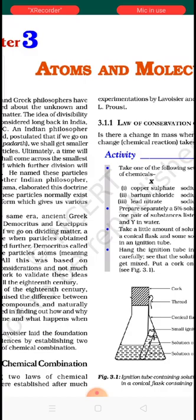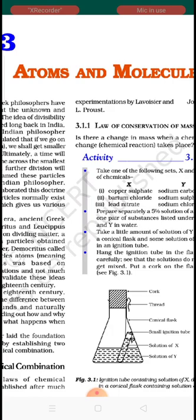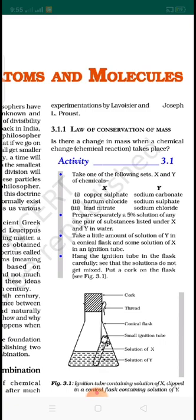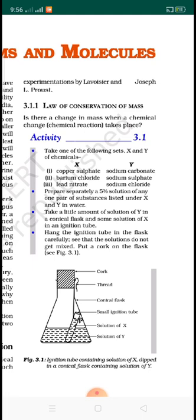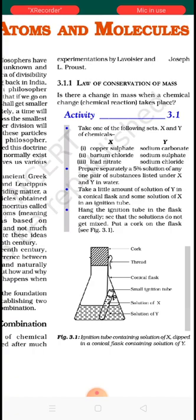According to Antoine Lavoisier, when a chemical change takes place, mass should always be constant. That means mass should be neither created nor destroyed. This law is called the law of conservation of mass. Mass can neither be created nor destroyed, but it can convert from one form to another form.